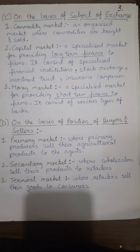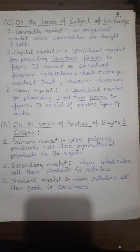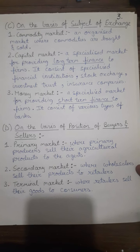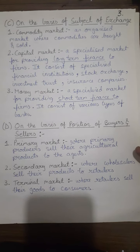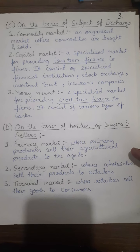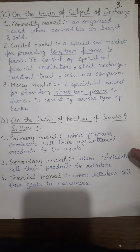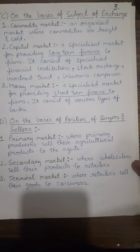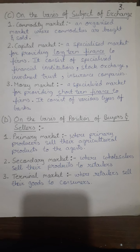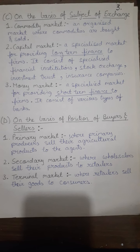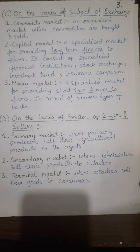Next, on the basis of position of buyers and sellers: primary market, secondary market, and terminal market. Primary market is where primary producers sell their agriculture products to agents. Secondary market is where wholesalers sell their products to retailers. And in terminal market, retailers sell goods to the ultimate consumers.